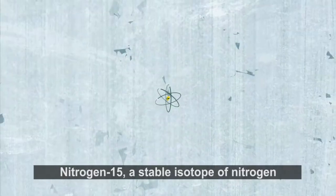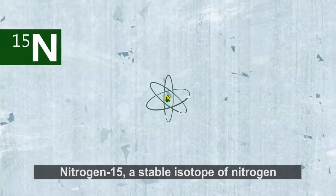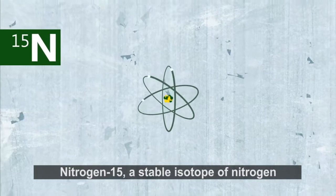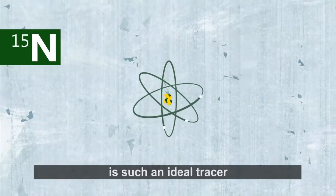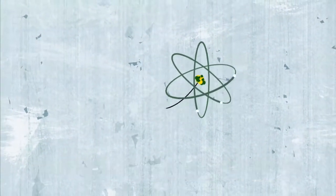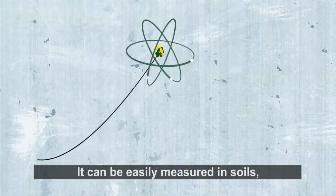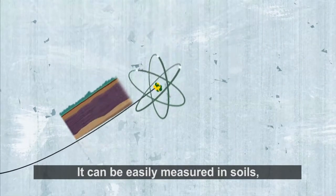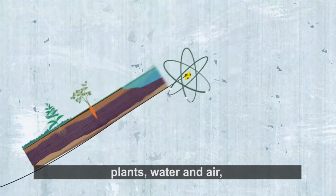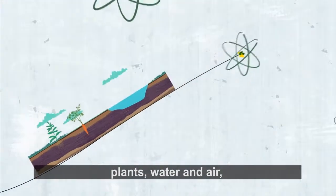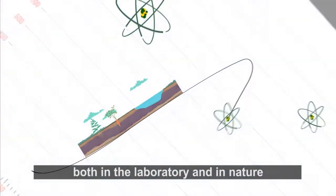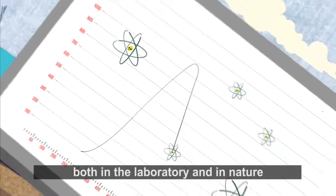Nitrogen-15, a stable isotope of nitrogen, is such an ideal tracer. It can be easily measured in soils, plants, water, and air — both in the laboratory and in nature.